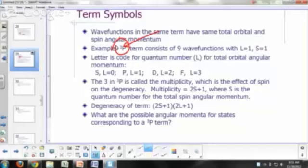is a code for the quantum number L. So if L is 0, the symbol you use is S. For a P term, you say quantum number L is equal to 1.